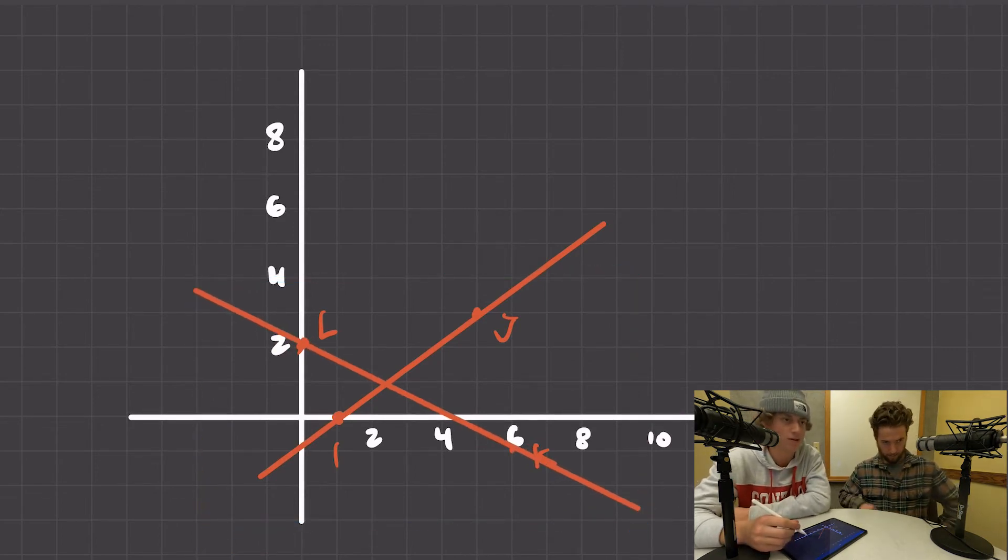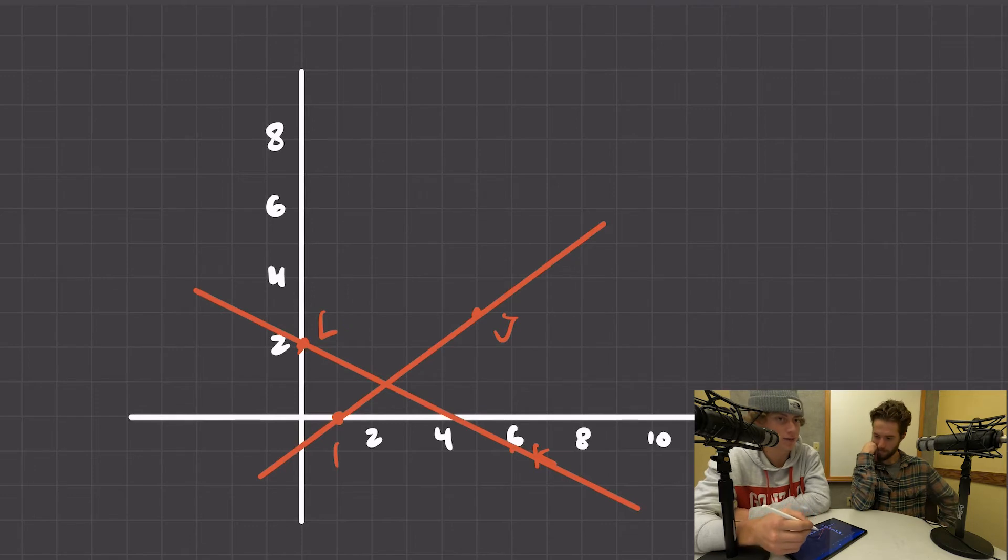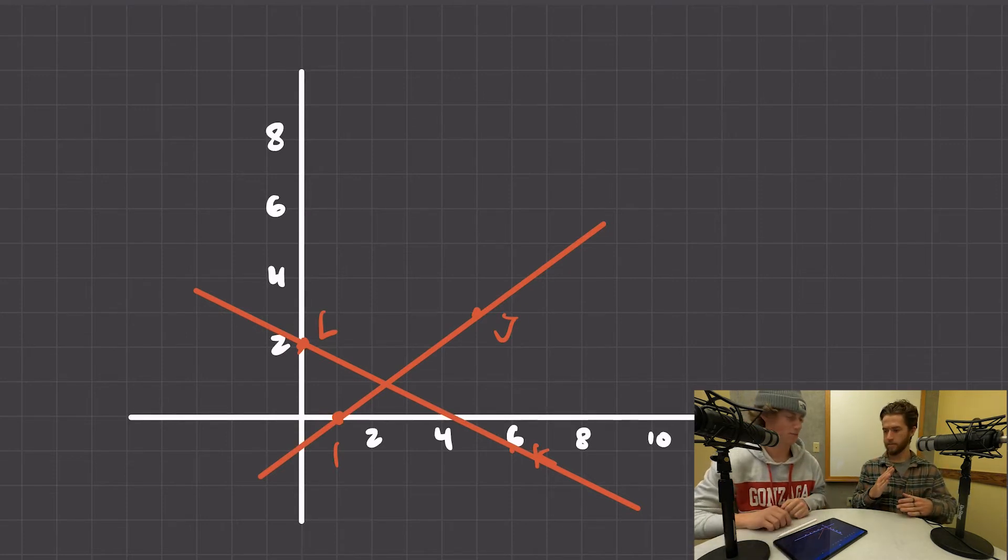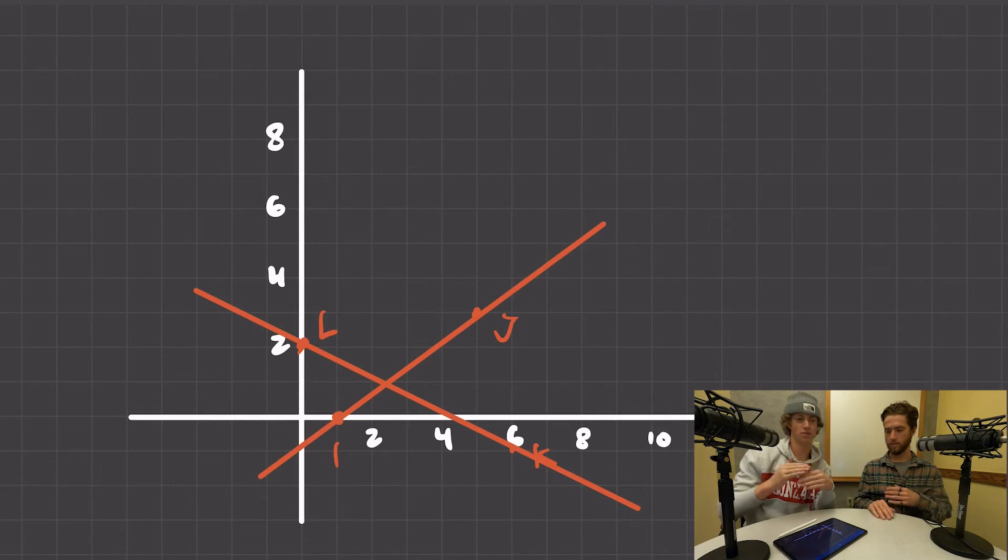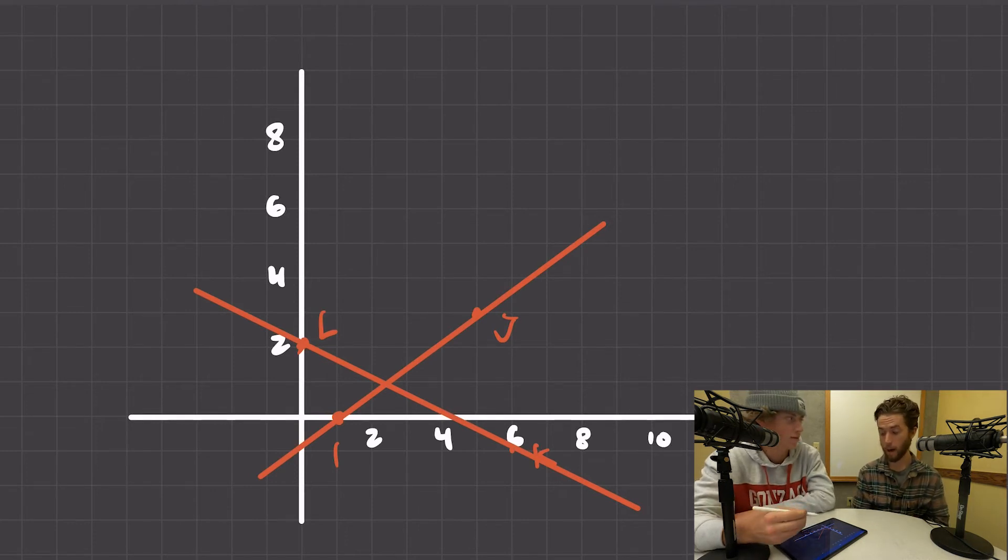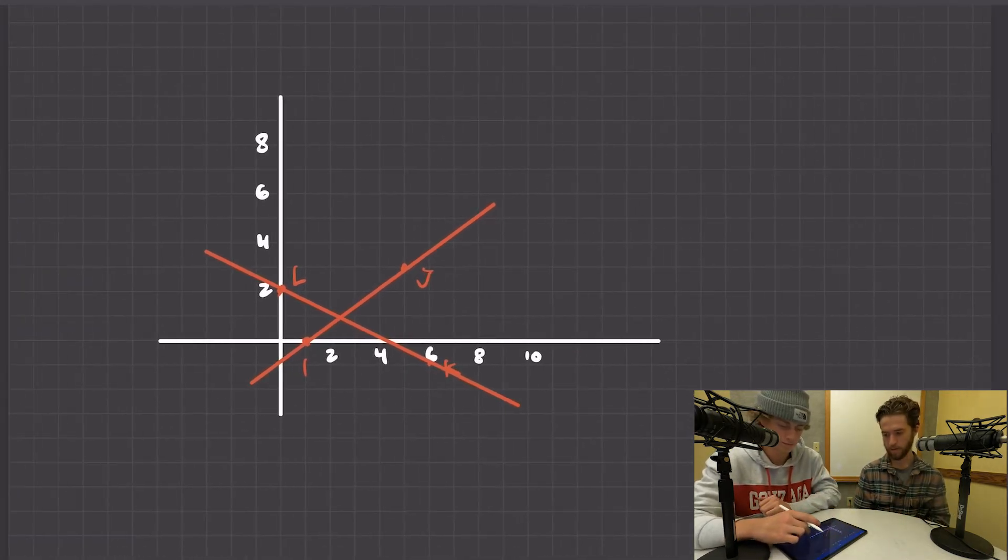Okay, so we need to find the slopes and figure out if these two are parallel, which I don't think they are. They're not parallel. Perpendicular? That's possible. Show me perpendicular with your hands. Perpendicular is 90 degree angles. It's not perpendicular. We're gonna find the slopes, and I'll show you the test to mathematically determine if it's perpendicular.